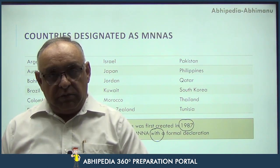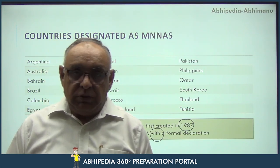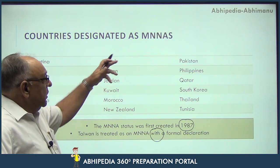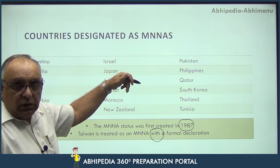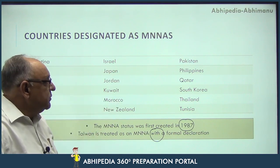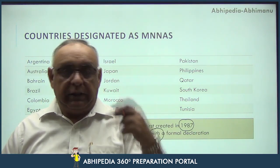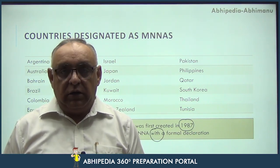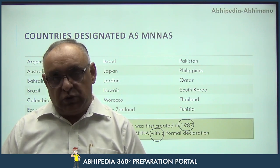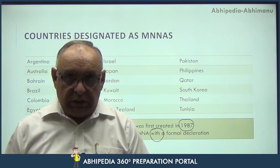A question can also be asked about who provides the MNNA status — is it given by the US or does NATO allow it? Such a question can be asked. Another question that can appear is: which of the following countries is not a Major Non-NATO Ally of the US? A prelims question could also be: which of the following South Asian countries enjoys the Major Non-NATO Ally status? Options could include Pakistan, Nepal, Sri Lanka, India, or none of these. A question can also be asked about which country's MNNA status was recently cancelled.